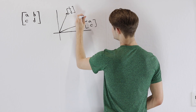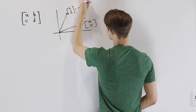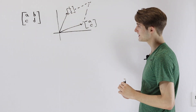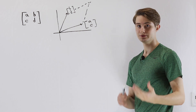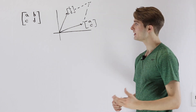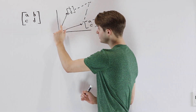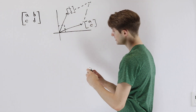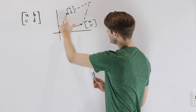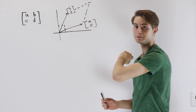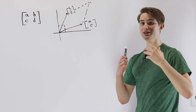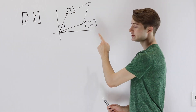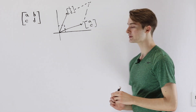If we complete the parallelogram, what it's asking is: if we start with normal 2D space and stretch it so that every 1x1 square gets stretched up into this parallelogram, how much would the area get scaled? So our job now is to find the area of this parallelogram.